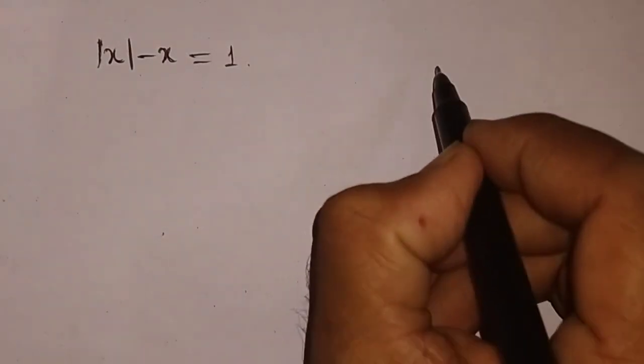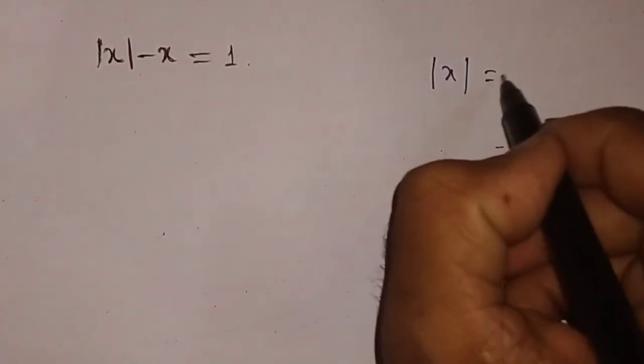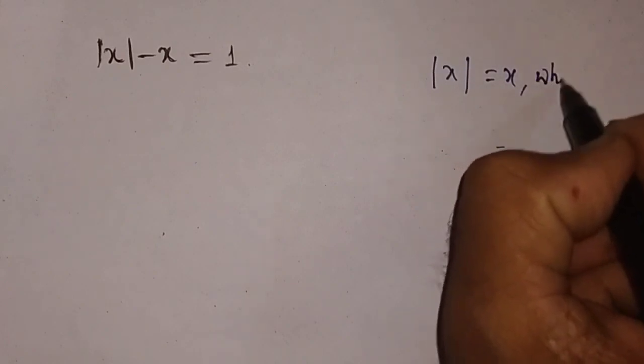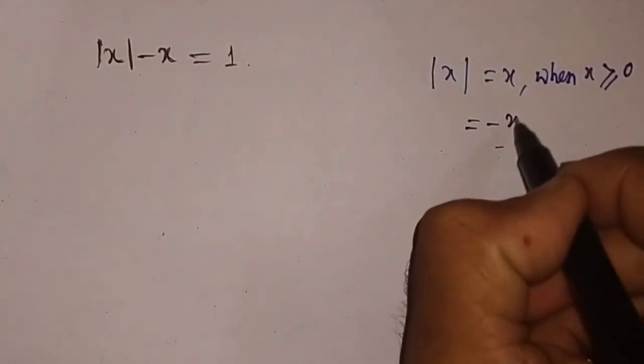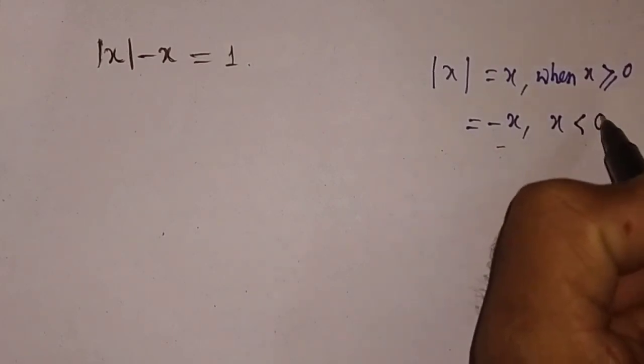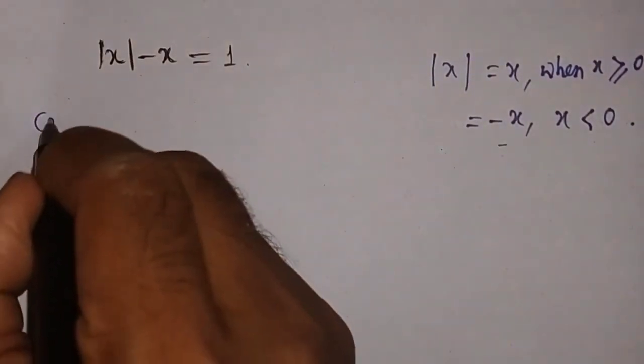This is |x|, and we know |x| is equal to x when x is greater than or equal to 0, and equal to -x when x is less than 0. So in case 1,